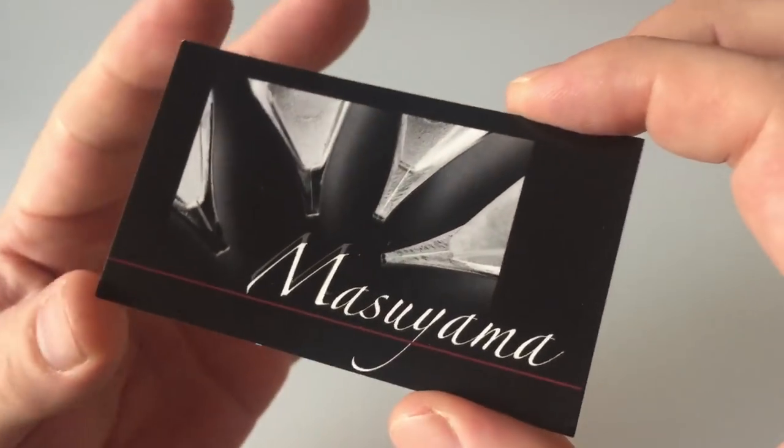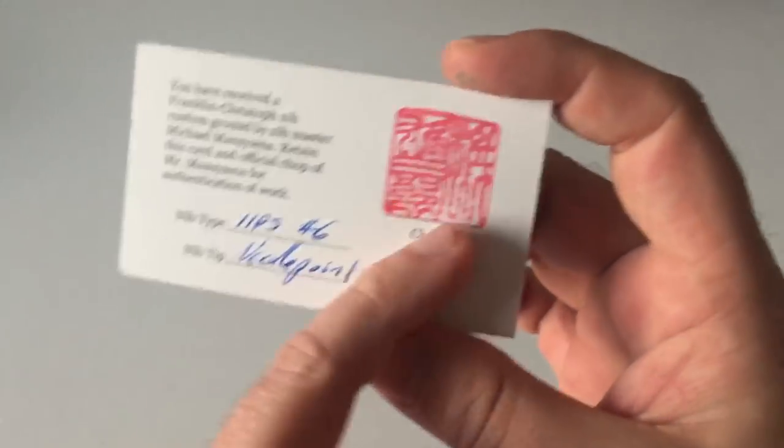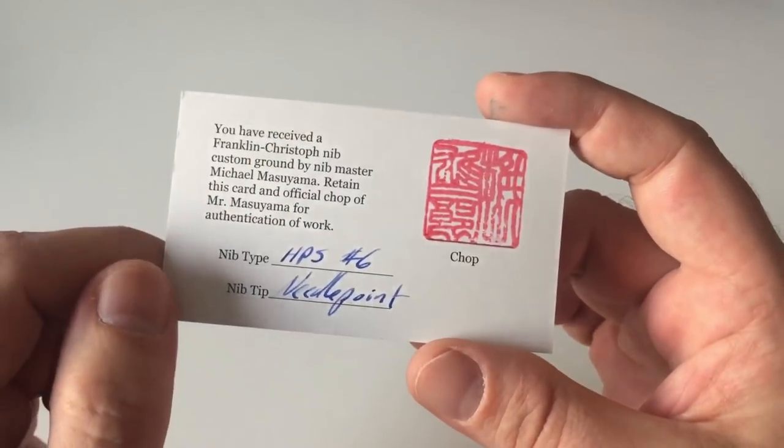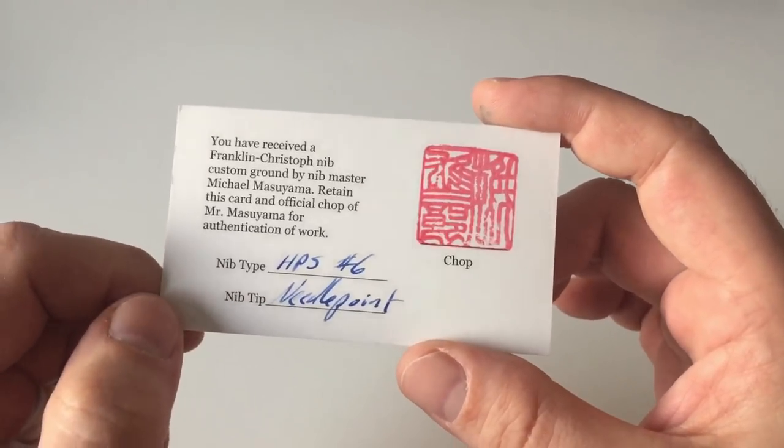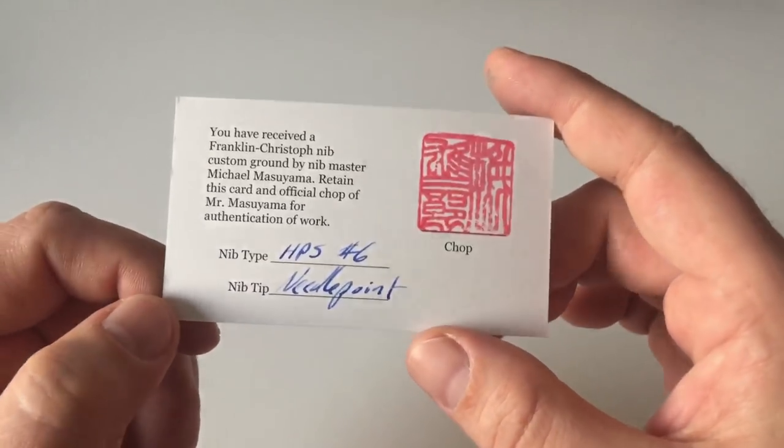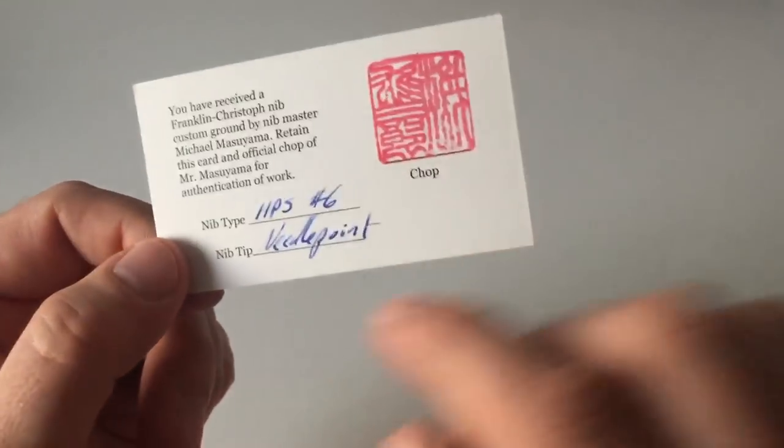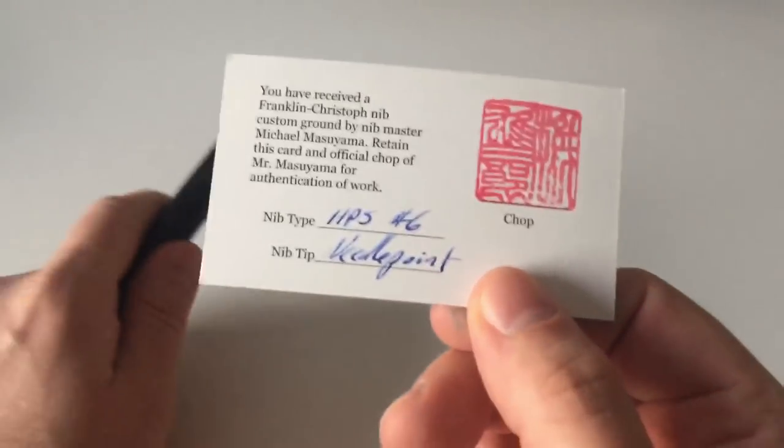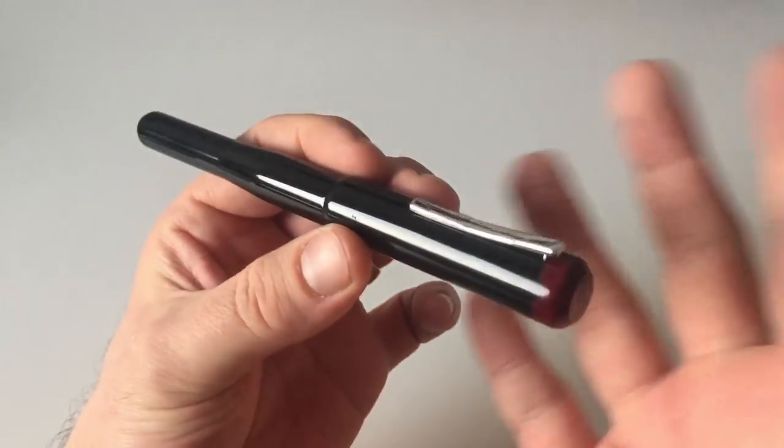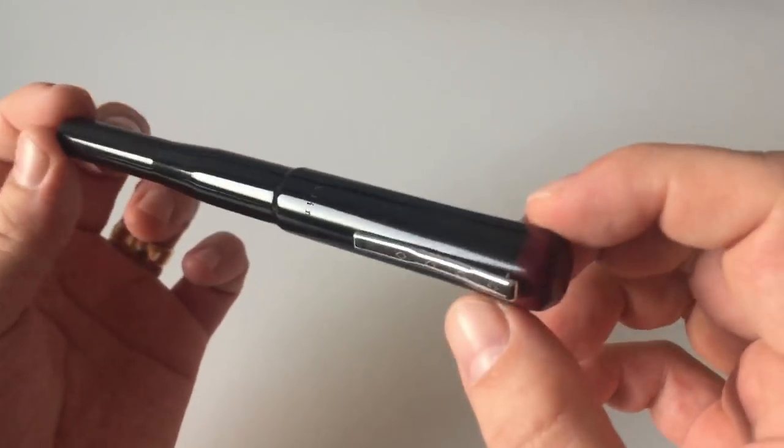And then you get a Masuyama, the famous Mike Masuyama nib meister business card with the Masuyama chop on it. You have received the Franklin Christoph nib custom ground by nib master Michael Masuyama. Retain this card as official job for Mr. Masuyama for authentication of work. So that was a JoWo number 6 extra fine steel nib, and Mr. Masuyama has ground that to needlepoint, which is awesome. It's one of the smoothest, very fine nibs that I've ever written with. This is really like Mr. Masuyama's nib skills are insane, so to speak. Really awesome.